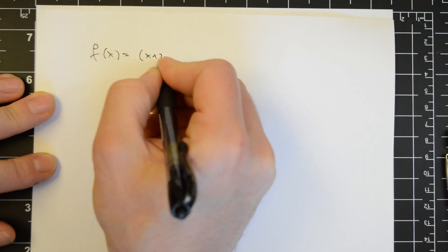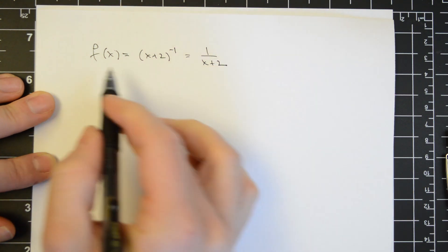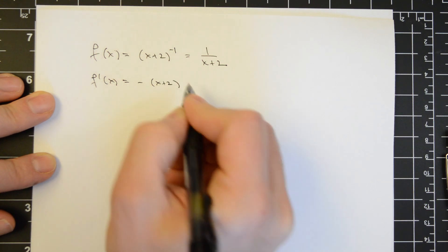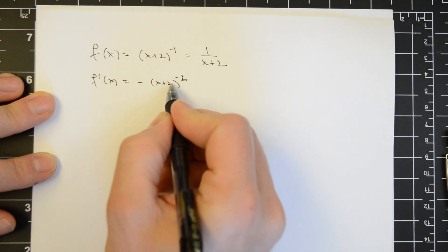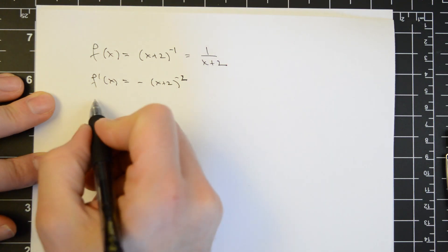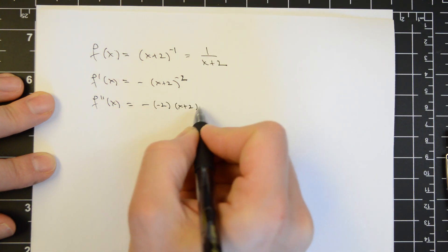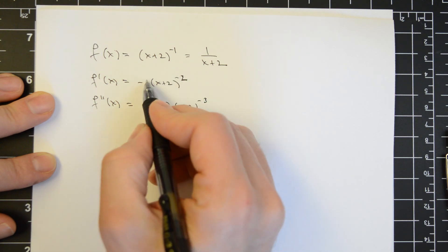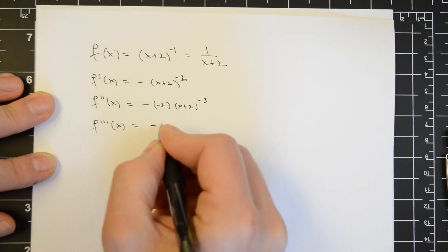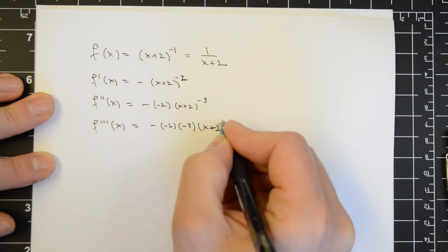Here, f of x is equal to x plus 2 to the power minus 1, which is equal to 1 over x plus 2. The reason why I write it in this form is to invoke the power rule of differentiation, which tells me that the derivative is minus x plus 2 to the minus 2 power, with a chain rule term of 1. f double prime of x is equal to minus 1 times minus 2 times x plus 2 to the minus 3, bringing this power down, with chain rule again equal to 1. f triple prime of x is equal to minus 1 times minus 2 times minus 3 times x plus 2 to the power minus 4.